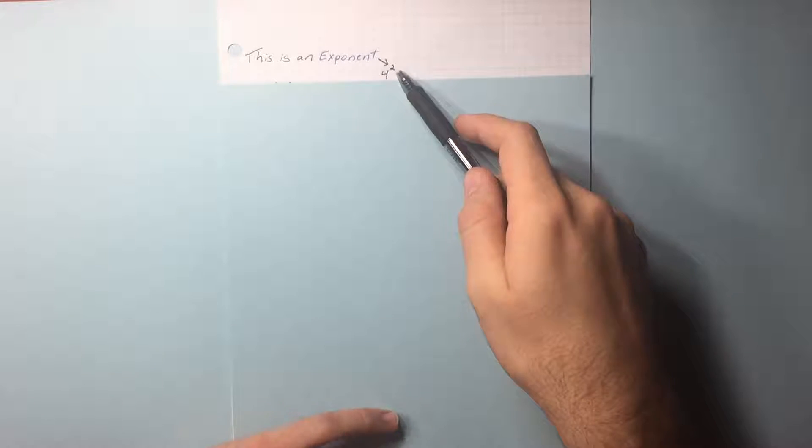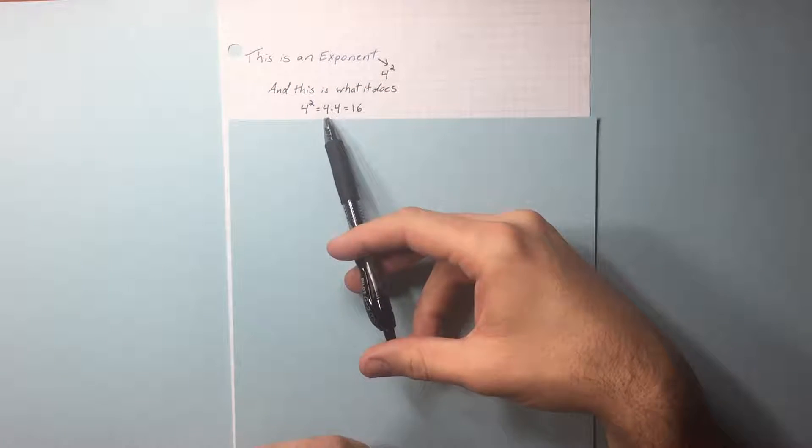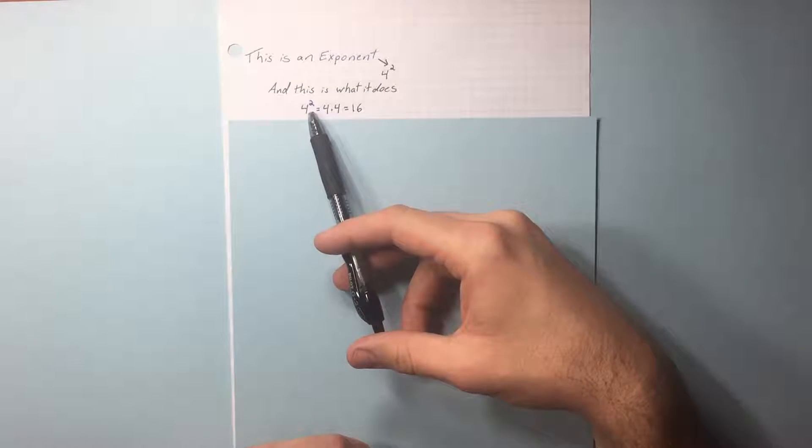So this is an exponent, this little 2. This 4 is what they call a base. What does that mean? It means that you times the base by itself 2 times.